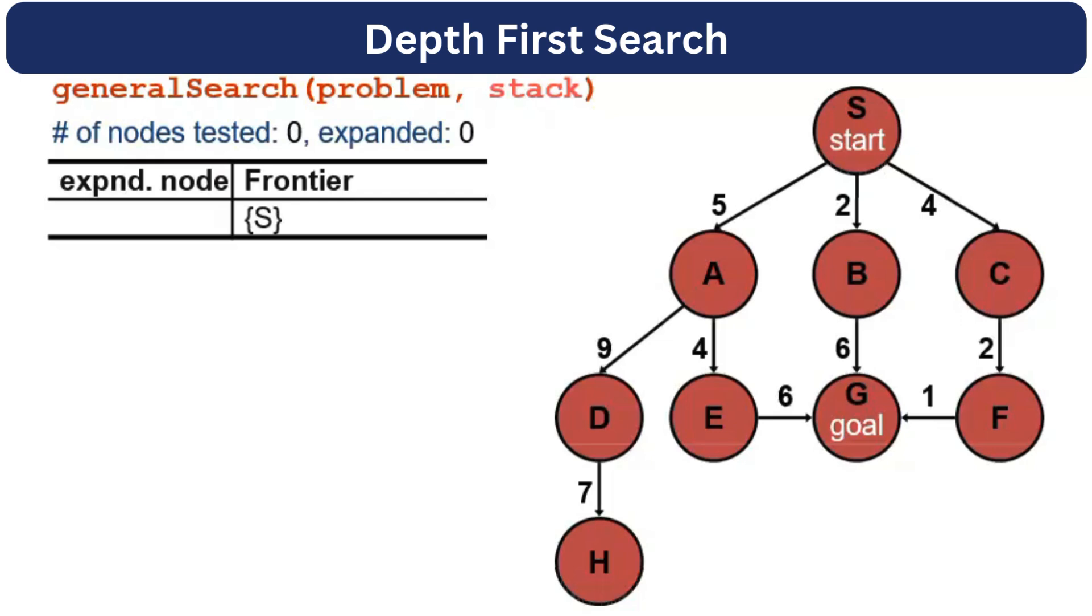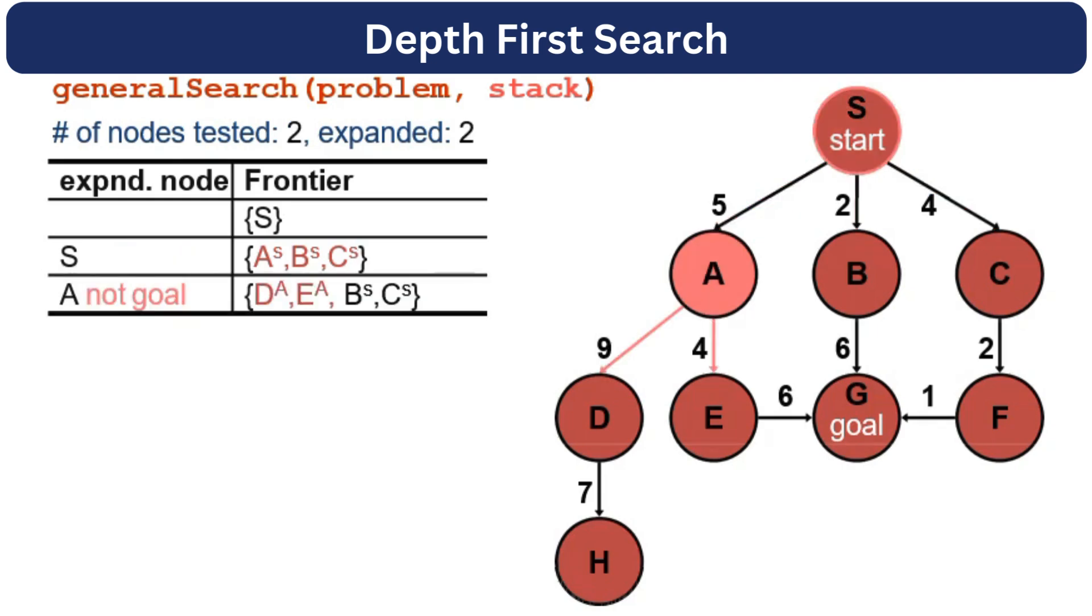Now let's apply DFS algorithm to the same example. Here, the only difference is the data structure, which is stack instead of queue. We will start with the S node and explore its neighbors, which are A, B, and C. We will put them into the stack. We will check if S is the goal or not. S is not the goal. The first element in the stack will be popped out, which is A. We will explore A and visit its neighbors, which are D and E. Please note that as the data structure is stack, we have put them at the top of the stack.